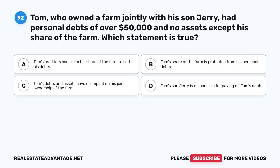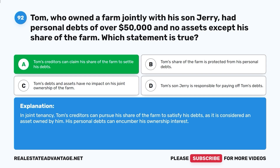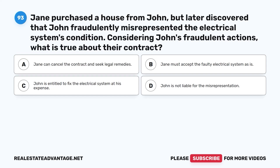Question 92: Tom, who owned a farm jointly with his son Jerry, had personal debts of over $50,000 and no assets except his share of the farm. Which statement is true? A. Tom's creditors can claim his share of the farm to settle his debts. B. Tom's share of the farm is protected from his personal debts. C. Tom's debts have no impact on his joint ownership. D. Tom's son Jerry is responsible for paying off Tom's debts. The correct answer is A. In joint tenancy, Tom's creditors can pursue his share of the farm to satisfy his debts, as it is considered an asset owned by him; his personal debts can encumber his ownership interest.